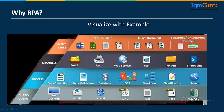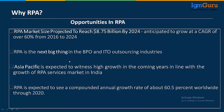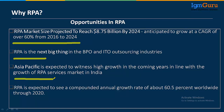Why RPA? Because RPA can work on each type of application, databases, and files — whether PDF, XML, text, Word, PNG. That's why there are a lot of opportunities in RPA. You can Google it — every day there are 100-plus job openings in RPA. The RPA market size is projected to reach $8.75 billion by 2024.